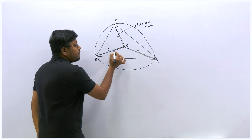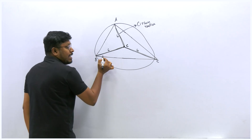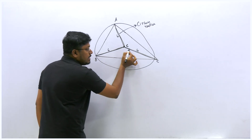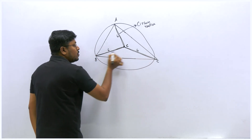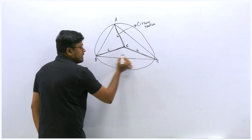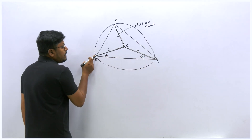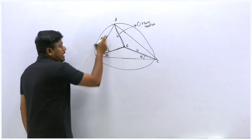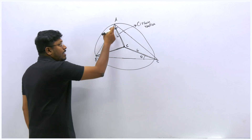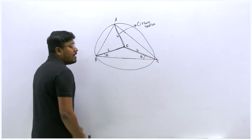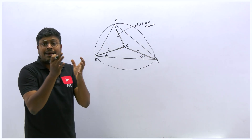Since all connecting lines are the same length—say 6 cm—when we take any two of them as sides of a smaller triangle, two sides are equal, making it an isosceles triangle. If two sides are equal, the opposite angles are also equal. So drawing a circumcenter splits the original triangle into three smaller isosceles triangles.